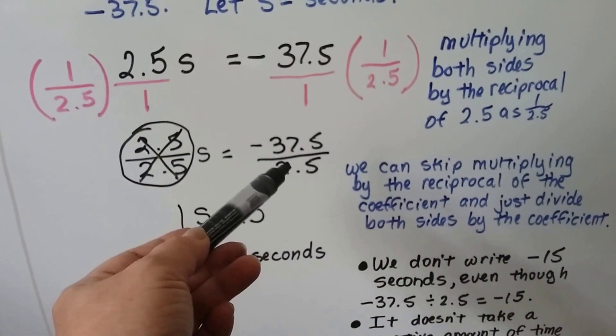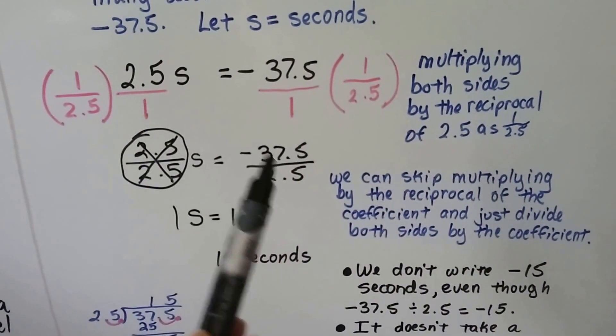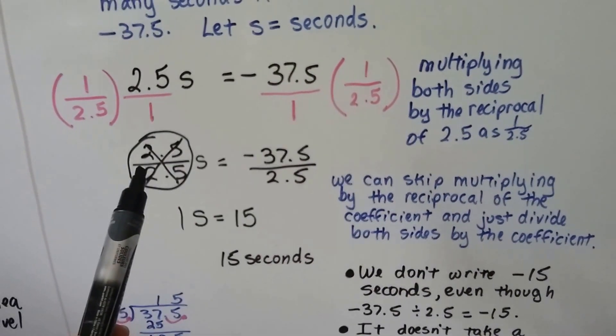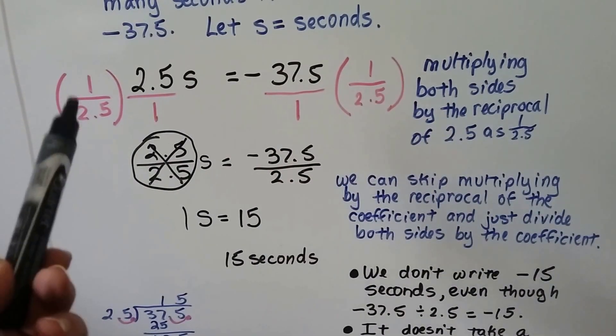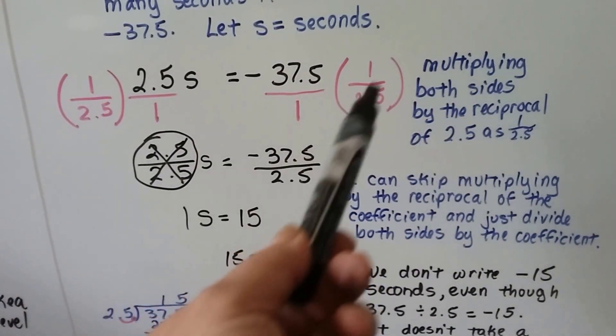Or, we could have just divided this 2.5 by itself on each side of the equation. By itself here, and on this side. So, we would still be doing the same thing to each side of the equal sign. We would just be dividing by this 2.5. It's the same thing as multiplying by the reciprocal.